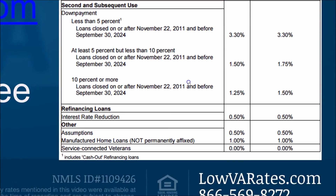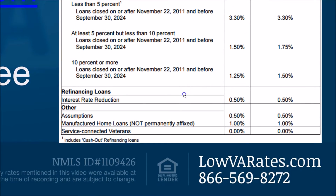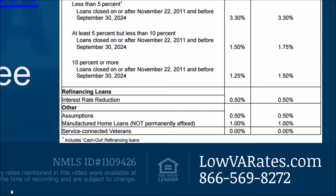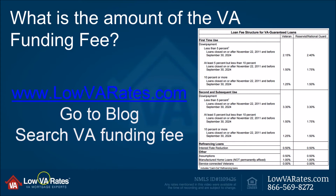For those refinancing, the Interest Rate Reduction Refinance Loan — also known as the IRRRL — has a funding fee of just 0.5%, no matter how many IRRRLs you do. On a $100,000 loan, that's just $500. And as mentioned, service-connected disabled veterans never pay the funding fee.